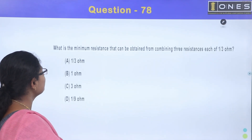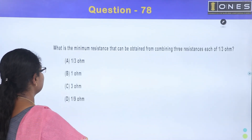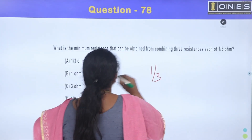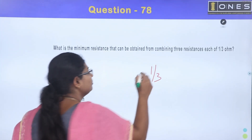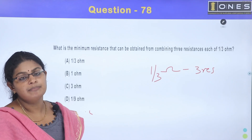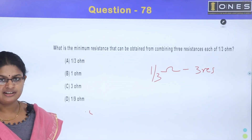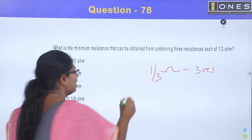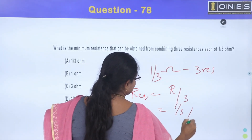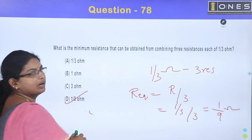What is the minimum resistance that can be obtained from combining 3 resistors each of 1/3 ohm? Option A, 1/3 ohm; Option B, 1 ohm; Option C, 3 ohm; Option D, 1/9 ohm. With 3 resistors of 1/3 ohm each connected in parallel, the answer is Option D, 1/9 ohm.